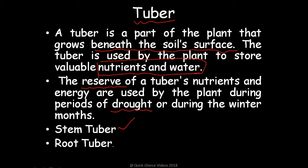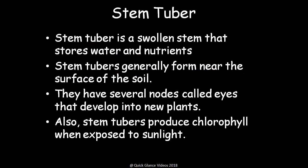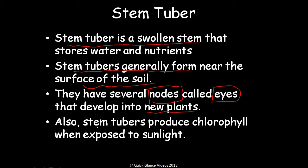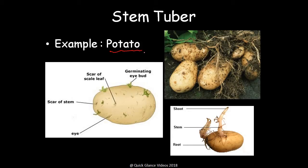There are two types of tubers: stem tuber and root tuber. The stem tuber is a swollen stem that stores water and nutrients — it is a modification of the stem. It generally forms near the surface of the soil and has several nodes and eyes that develop into new plants. Stem tubers also produce chlorophyll when exposed to sunlight — as seen in potatoes, where some portions turn green upon sun exposure. Potato is a common example; you can see the shoots, stem, and eyes developing into a new plant.